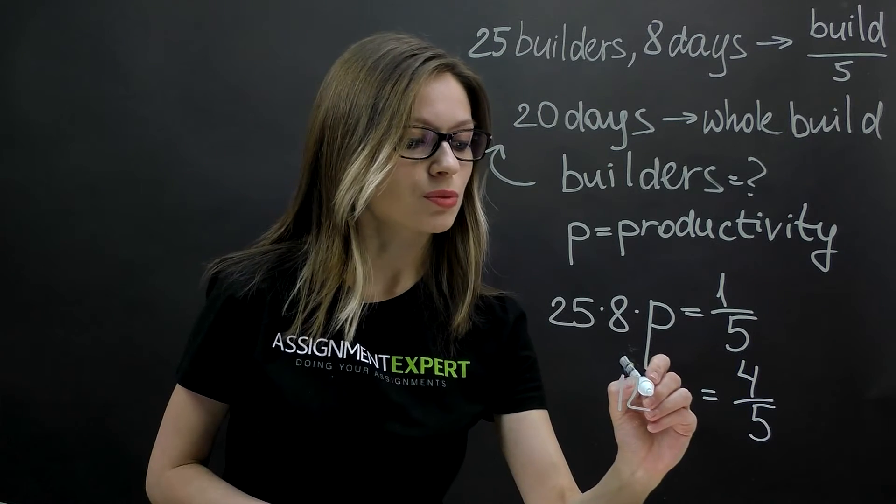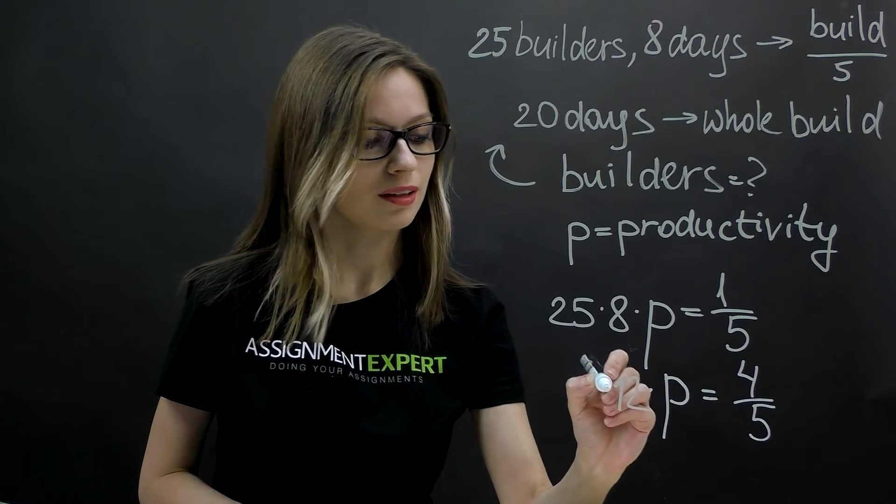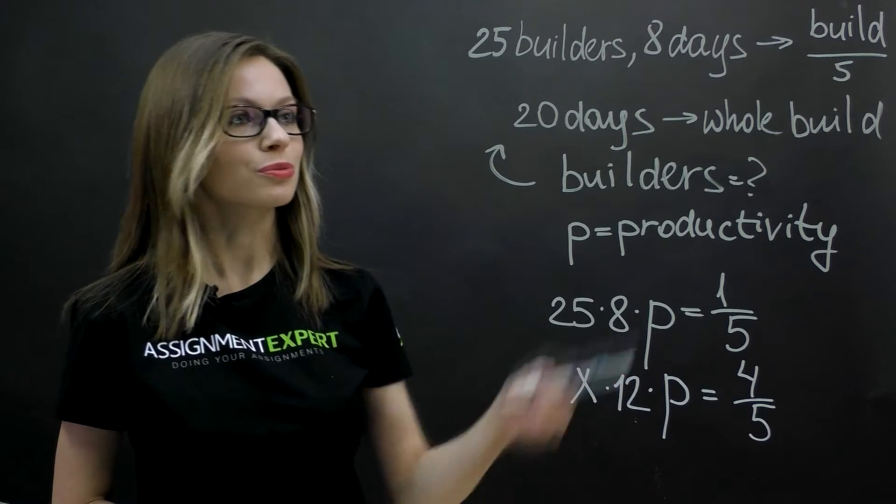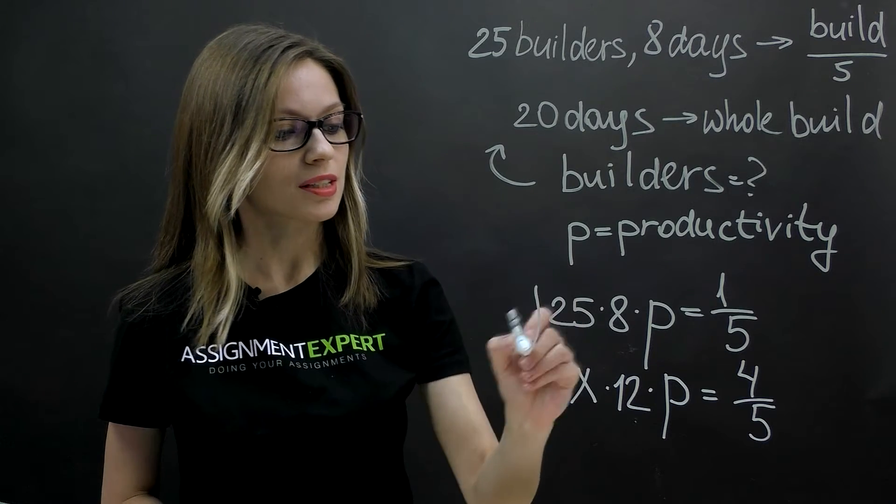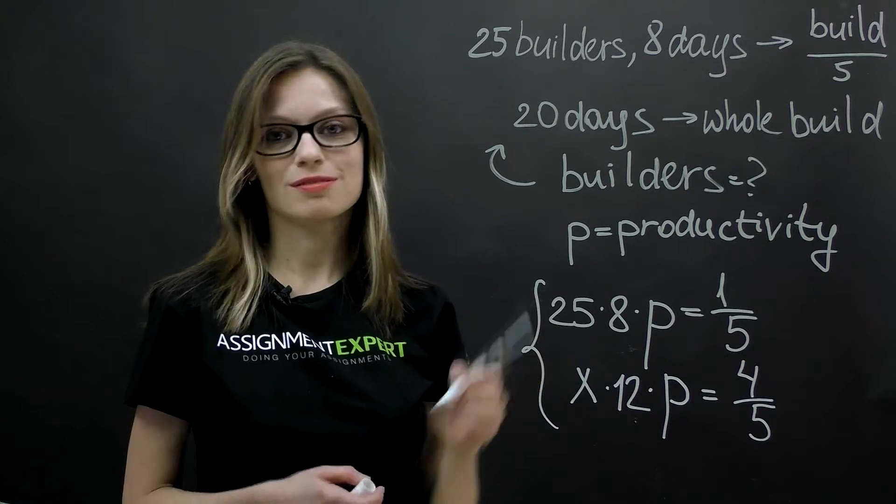Assuming that the builders will be working with the same productivity, x is the number of builders that should be involved in order to make this deadline. So we came up with a system of equations of two equations with two unknowns, which seems very doable.